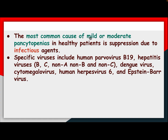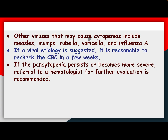The most common cause of mild or moderate pancytopenia in healthy patients is suppression due to infectious agents. Specific viruses include human parvovirus B19, hepatitis virus B, C, non-A/non-B/non-C, dengue virus, cytomegalovirus, human herpesvirus 6, and Epstein-Barr virus. Other viruses that may cause cytopenia include measles, mumps, rubella, varicella, and influenza A. If a viral etiology is suggested, it is reasonable to recheck the complete blood count in a few weeks. If pancytopenia persists or becomes more severe, referral to a hematologist is recommended.